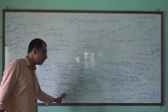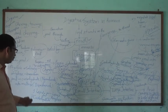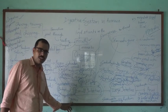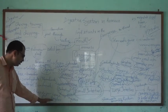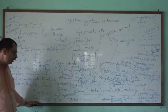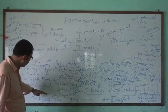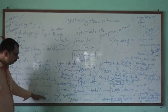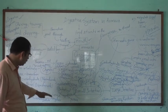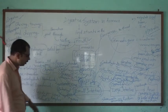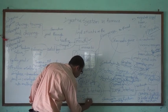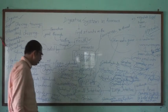This intestinal juice contains three types of enzymes: amylase, lipase, and a protease enzyme. Amylase acts on the digestion of carbohydrates. Lipase acts on the digestion of lipids. And the protease acts on the digestion of protein, so here the substrate is protein.